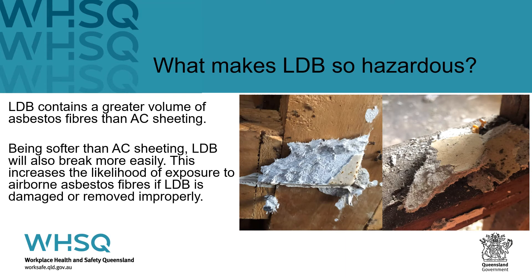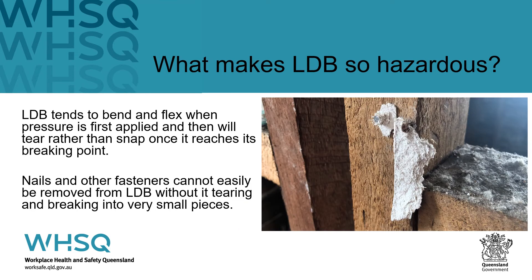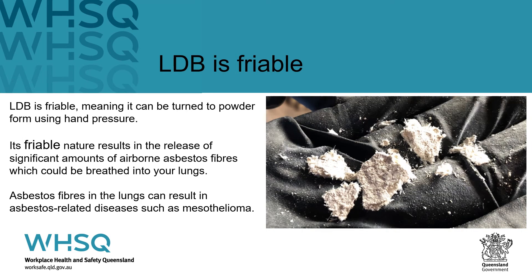LDB contains a greater volume of asbestos fibres than AC sheeting. Being softer, LDB will also break more easily, increasing the likelihood of exposure to airborne asbestos fibres when LDB is damaged or removed improperly. LDB tends to bend and flex when pressure is applied and then tears rather than snaps at its breaking point. Nails and fasteners cannot easily be removed without LDB tearing and breaking into very small pieces. LDB is a friable asbestos-containing material — friable means it can be turned to powder form using hand pressure — resulting in the release of significant amounts of airborne asbestos fibres which could be breathed into your lungs, potentially causing asbestos diseases such as mesothelioma.